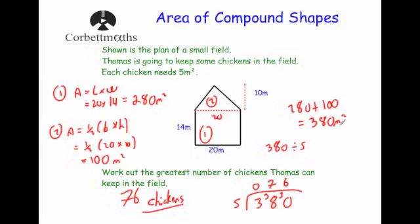To find the area of a compound shape: split the shape into smaller shapes, find any missing sides, calculate the area of each part, and then add them all together.